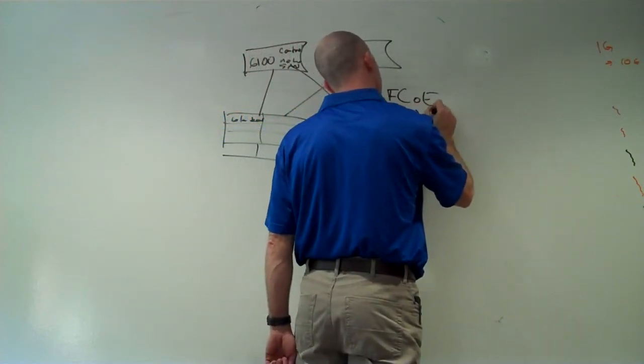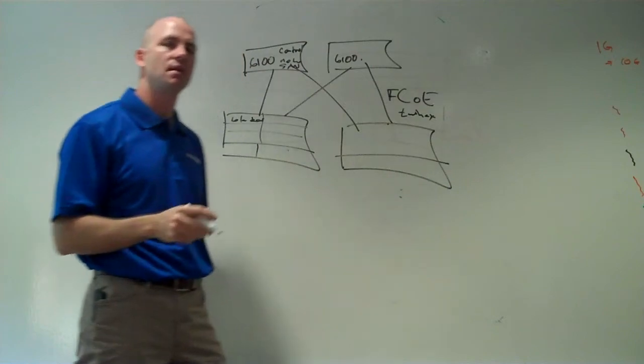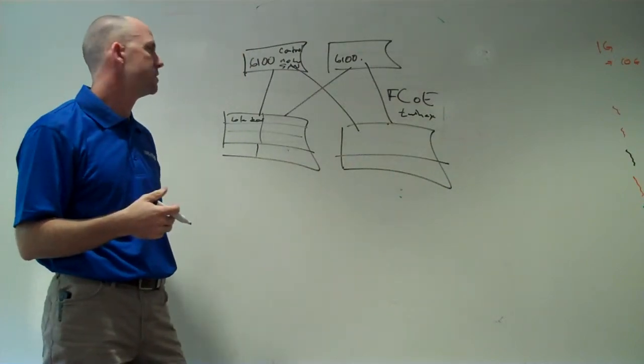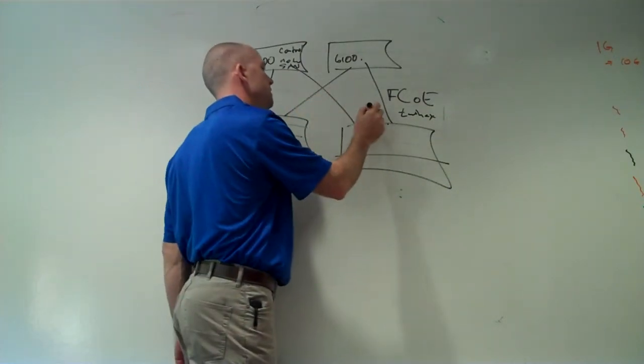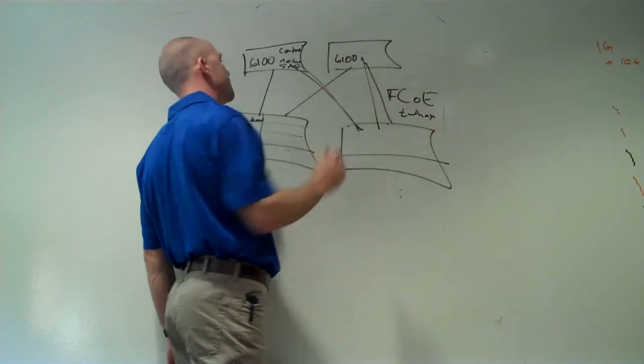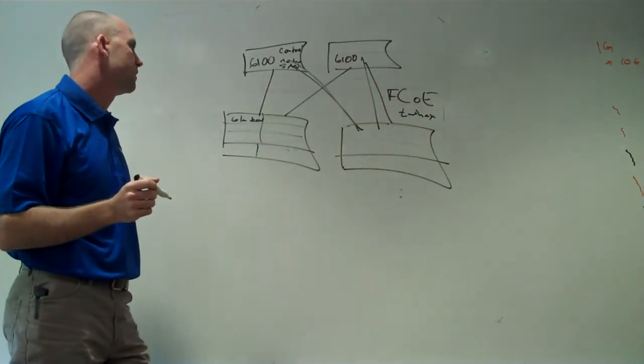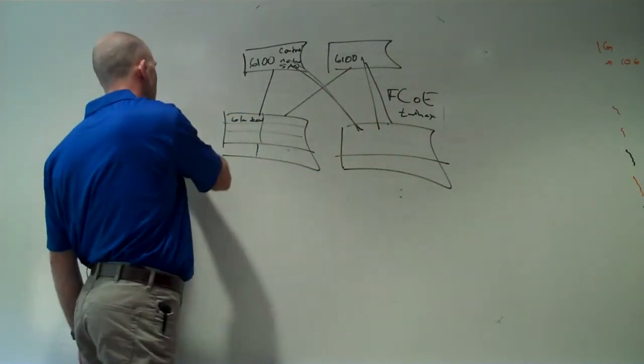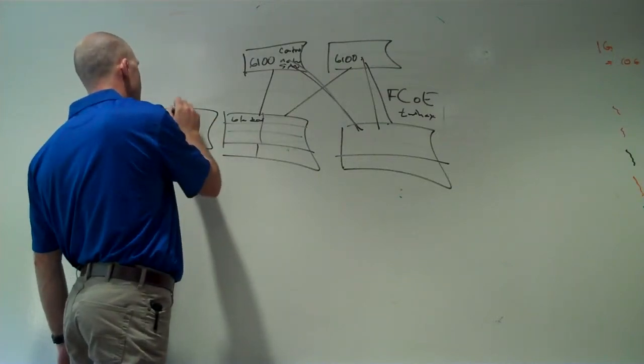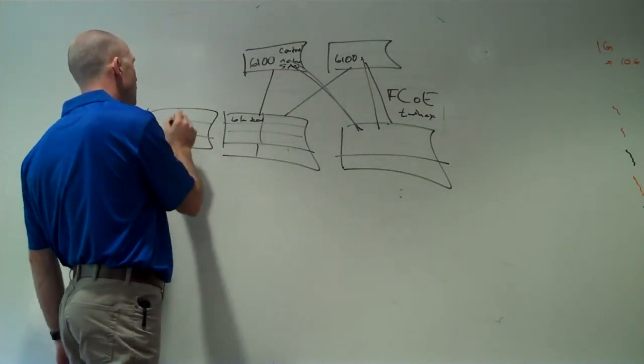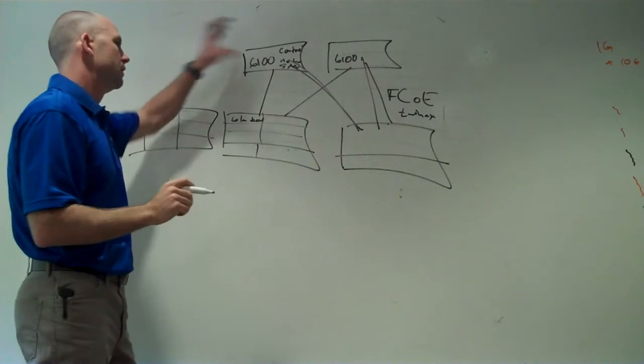So unlike the fiber connections that you have coming out of all the other chassis servers, you have inexpensive multiple Fiber Channel over Ethernet connections coming out of the Cisco blade servers. And as you add more and more blade servers, you're managing them all with one overall management system.